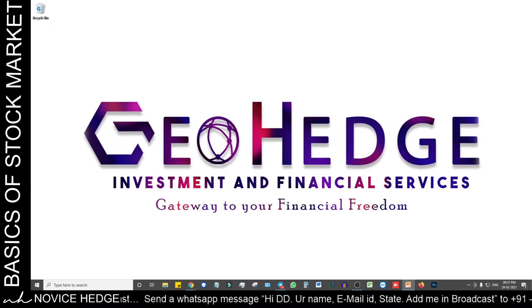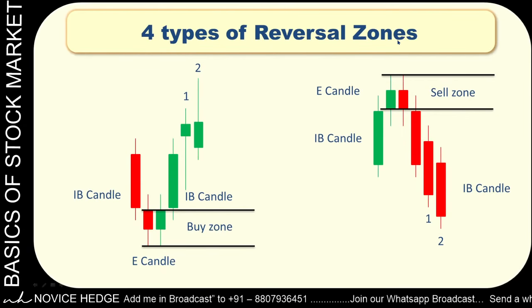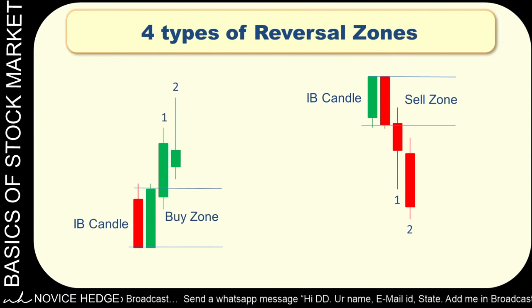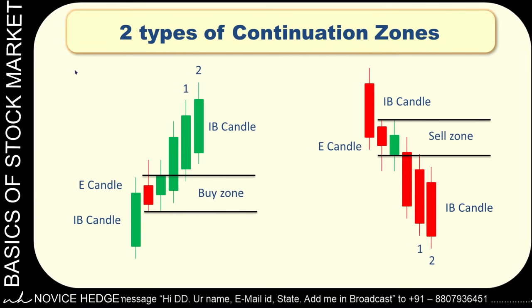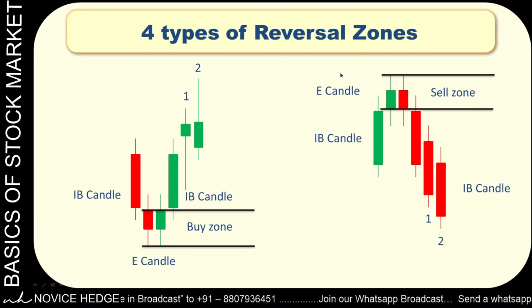Let me take you to today's slide — the slide has crossed 500. There are four types of reversal zones, and for all four zones we are going to look at how to fix the target and how to trail the profit. For the two continuation zones also we'll be planning how to book the target. Let me start one by one.